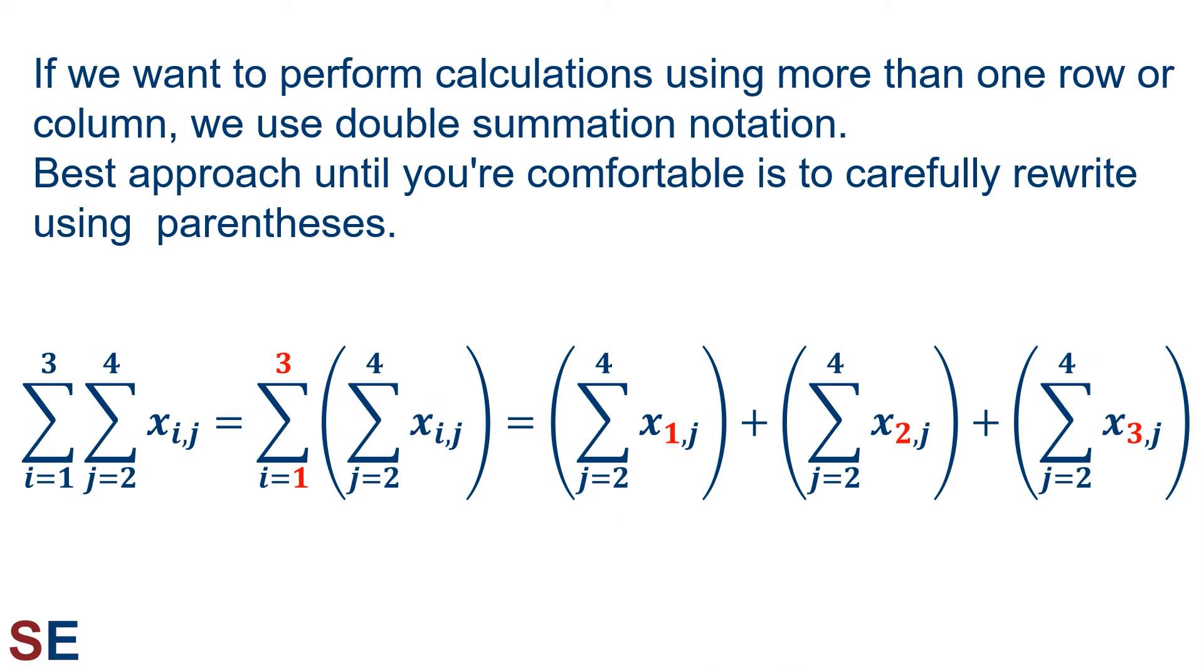If we want to perform calculations using more than one row or column, we use double summation notation. Don't get too freaked out. I know this can look confusing, but it's fine if you stay organized and go slow. The best approach until you're comfortable with double summation is to carefully rewrite the expression using parentheses as shown. In the double summation shown, we know on the far left that i will be going from 1 to 2 to 3, and that will be its value in each of the terms in the second sum where j is changing. To help keep track of this, it can be useful to put parentheses around that second summation to keep it distinct from the first. Then we can focus on expanding the index in the first summation as shown in those three terms on the right. We can go ahead and replace the i's in the subscripts with the numbers 1, 2, and 3, and then calculate each of those three summations where j is changing separately.